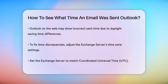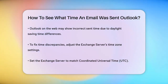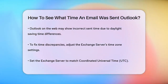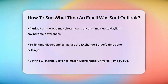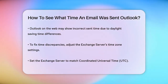If you're using Outlook on the web and encounter issues with incorrect sent time stamps, it might be due to differences in daylight saving time settings between your region and the server's region. To fix this, you need to set the time zone on the Exchange server to match the Coordinated Universal Time (UTC) zone of your country or region, ensuring it doesn't follow daylight saving time.